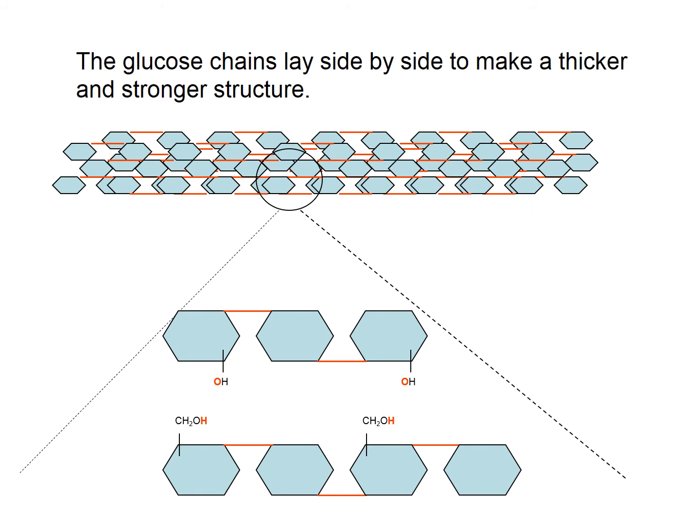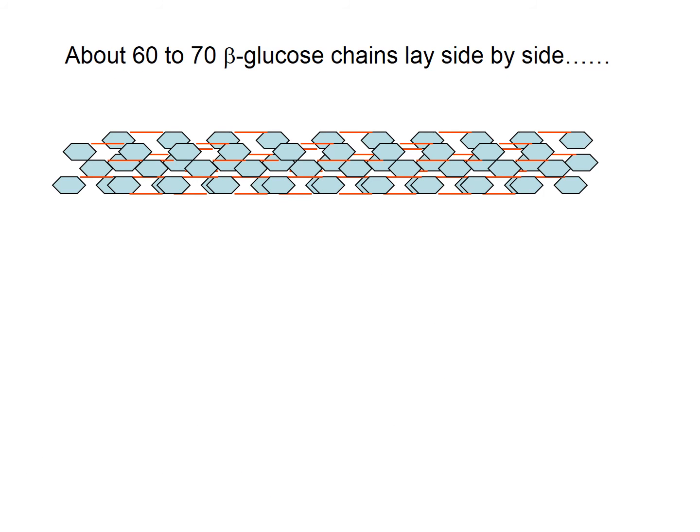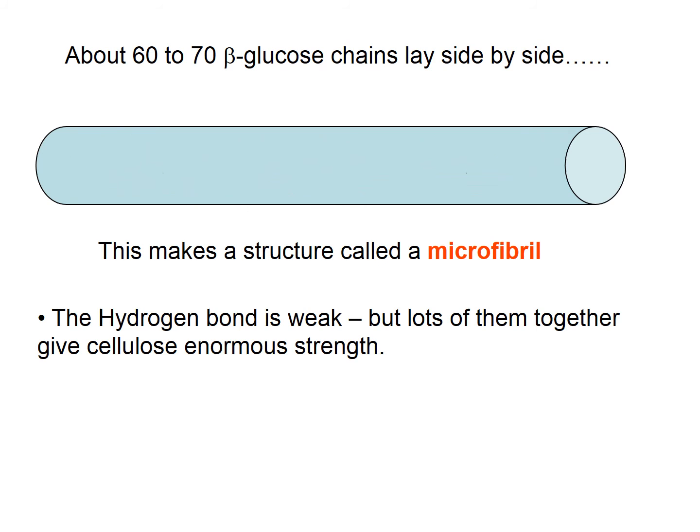Between each polysaccharide chain you can get the formation of hydrogen bonds. Now the hydrogen bonds themselves are weak, but you'll have thousands or millions of these, and together they form quite a strong structure. So approximately 60 to 70 of these beta glucose polysaccharide chains lying side by side forms something called a microfibril.